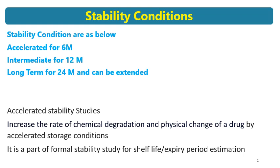Accelerated storage conditions involve the storage of formulation or API at 40 degrees Celsius and 75% RH for 6 months. Intermediate condition involves a storage period of 12 months at 30 degrees Celsius and 65% RH, and long-term condition involves storage for 24 months.